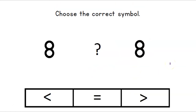Now we have a new question — choose the correct symbol. We have the number 8 and another number 8. Good job, it's the equal sign, because 8 is the same number as 8, which means they are equal.